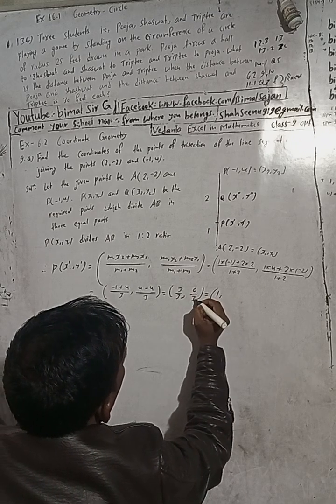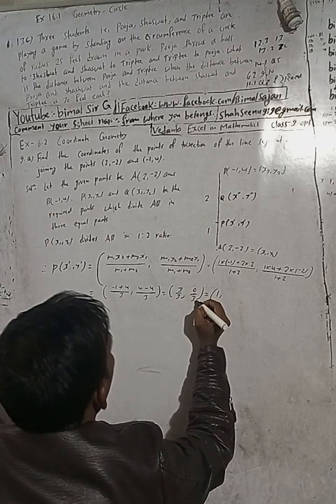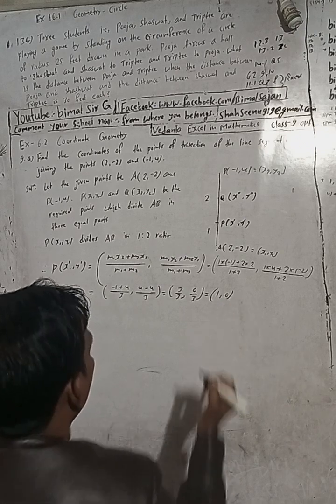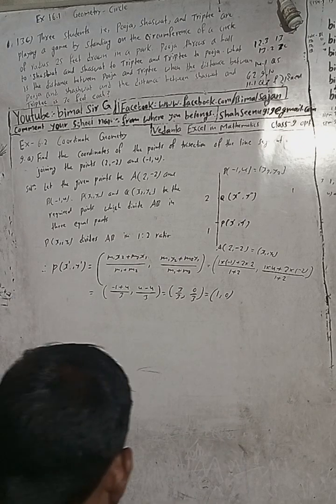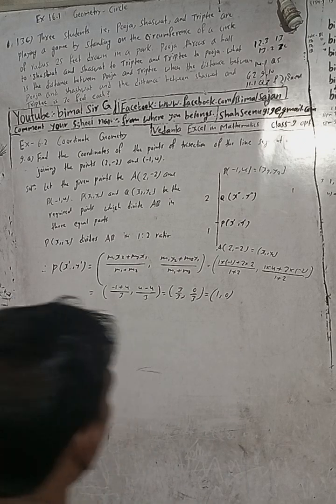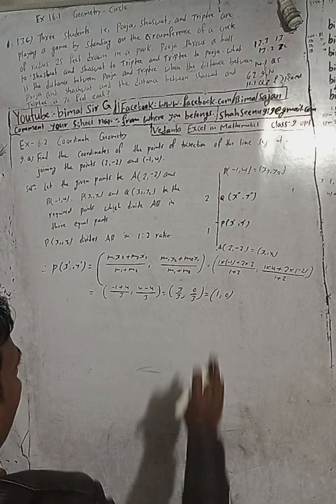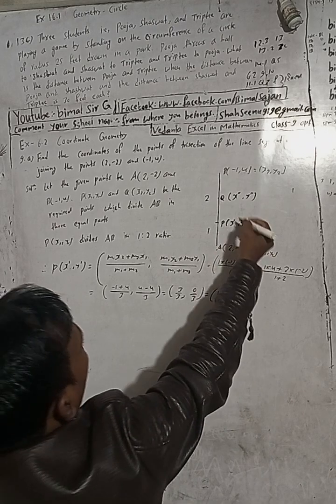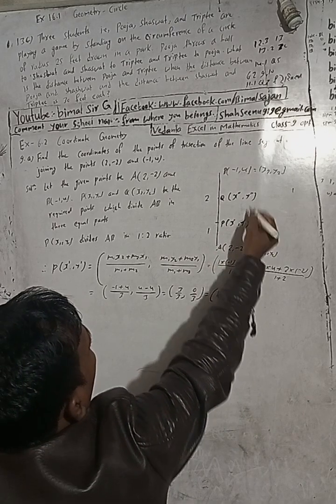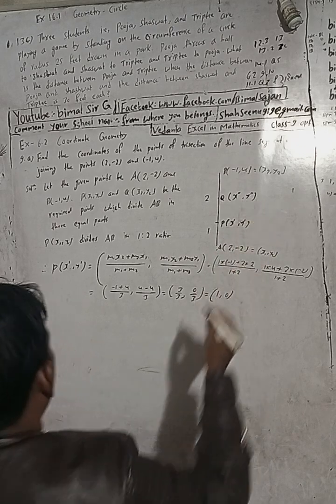The result is zero by three and three by three, which equals zero and one. So P equals one comma zero. This is the point P(1, 0), the first point of trisection.